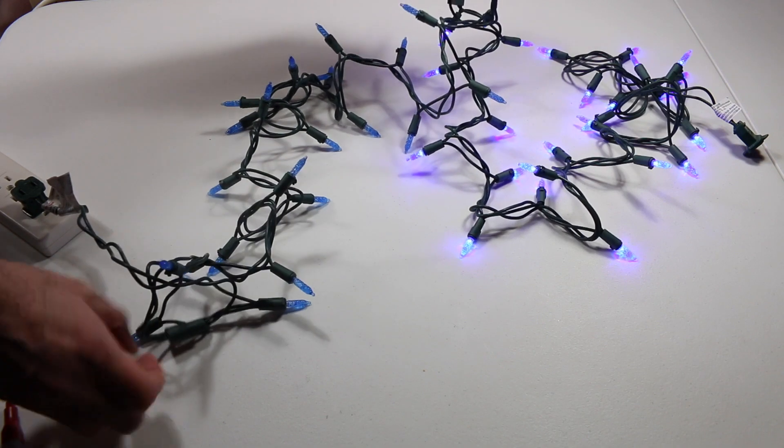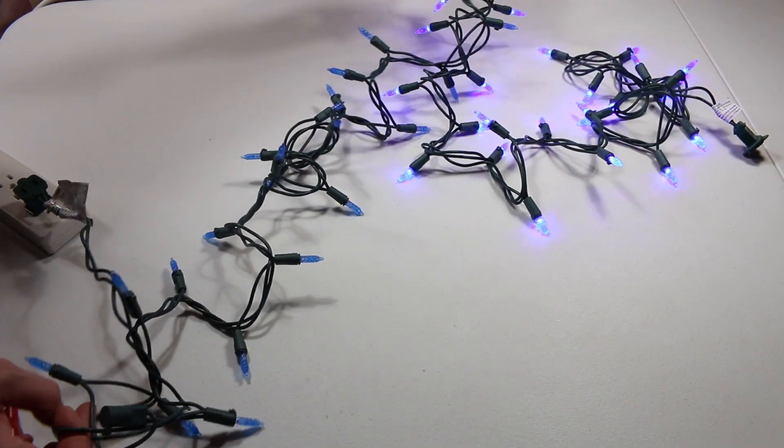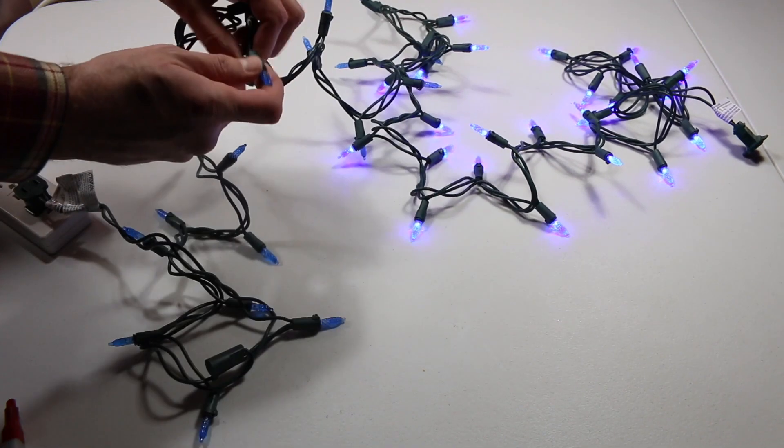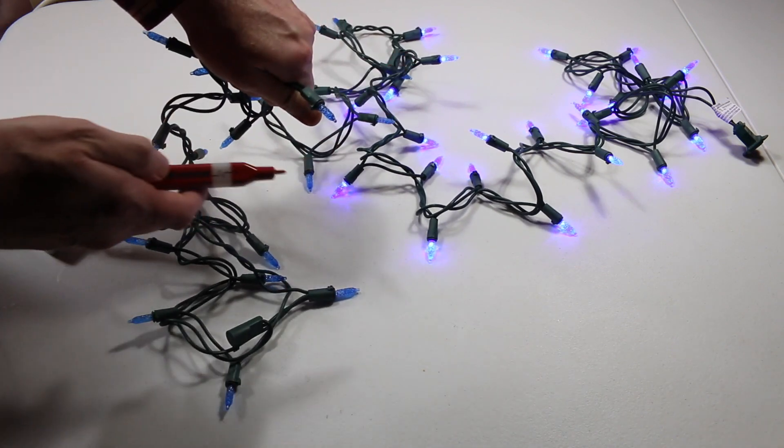So this is the section that's not lit. In order to figure out where the bad bulb is, I'll go somewhere about halfway and hold that so we just have the socket coming out.